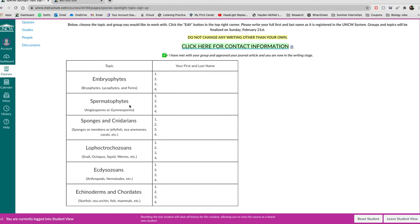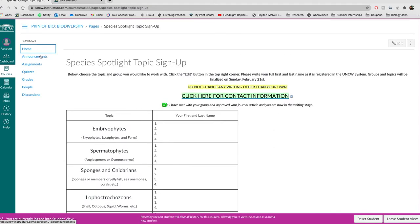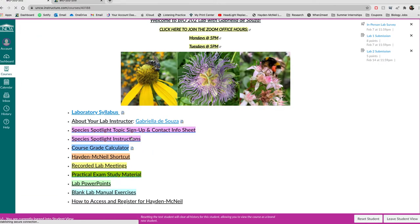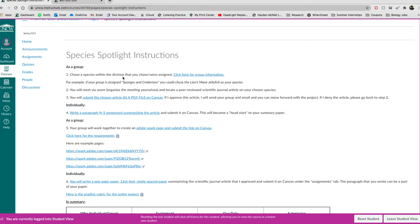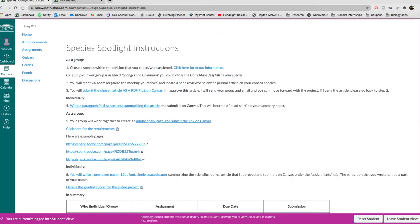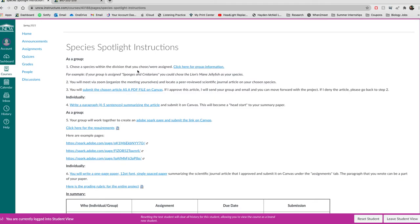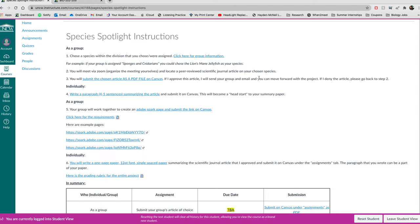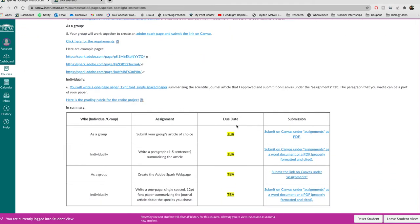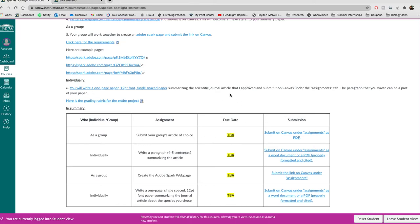This is the signup page. Now, if we go back to the homepage again, you'll see more detailed instructions on this project. So you're going to choose a species. You can click here to go back to that contact page. You're going to meet via zoom, talk about it, find an article of your choice. You're going to submit that article to me on canvas.